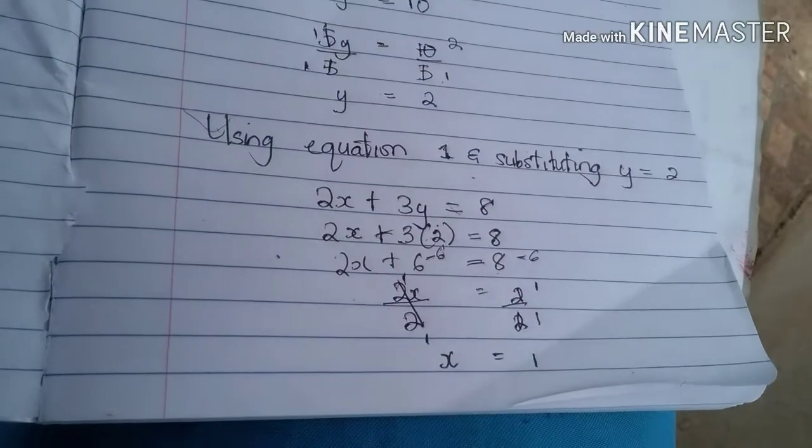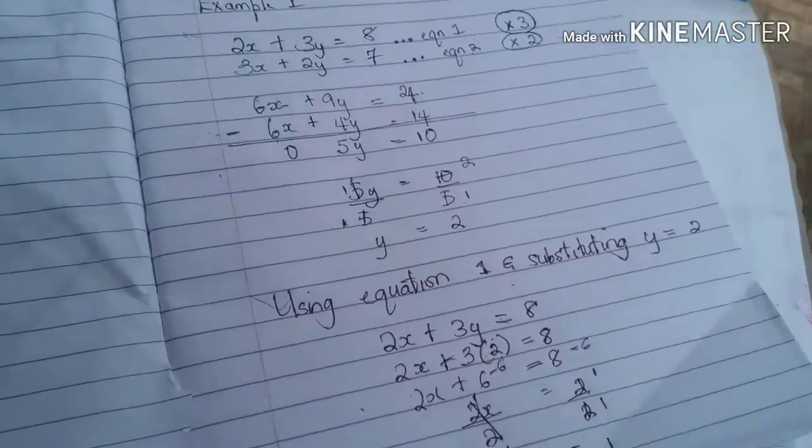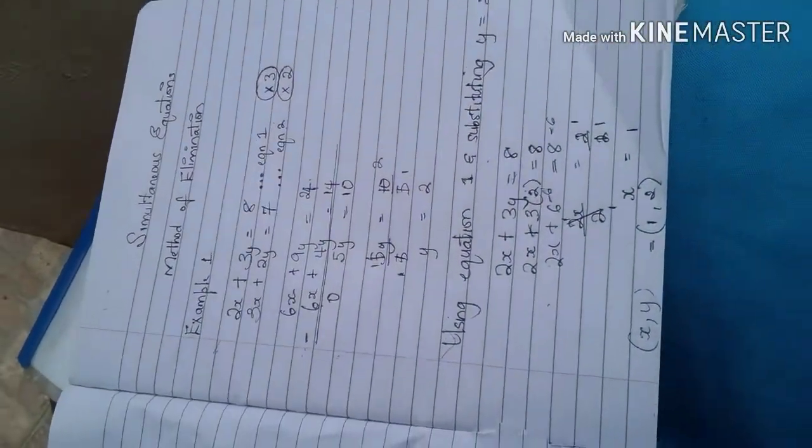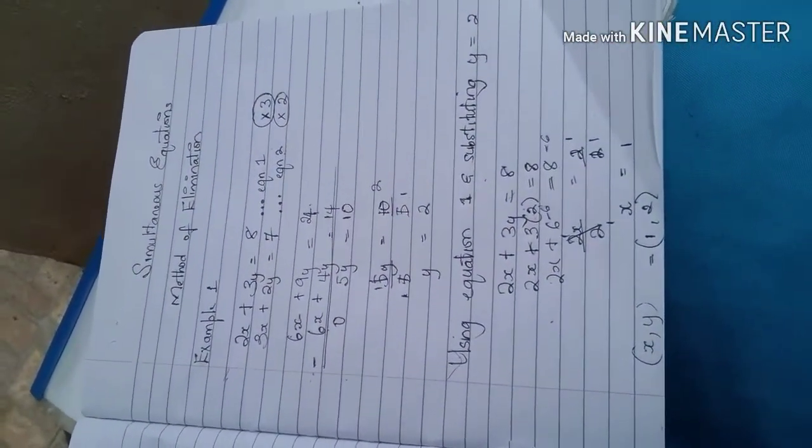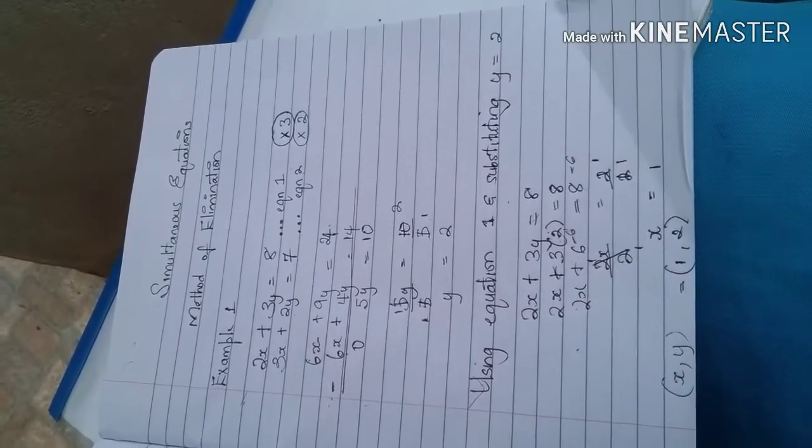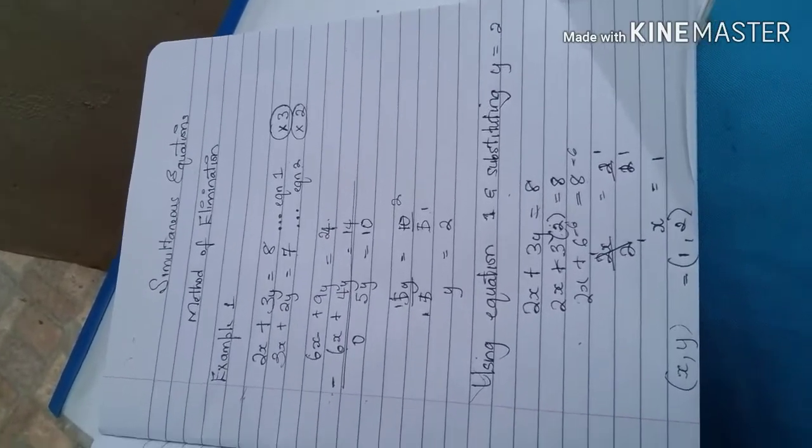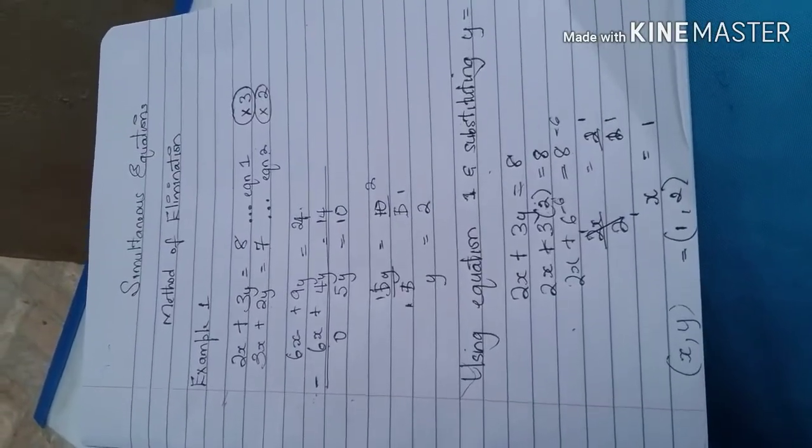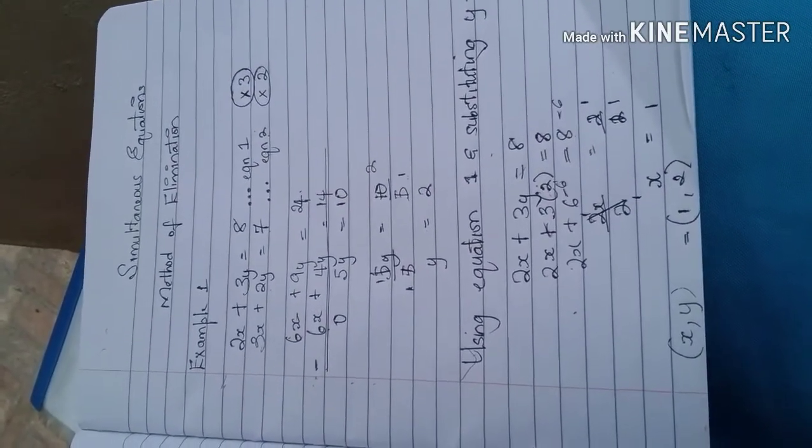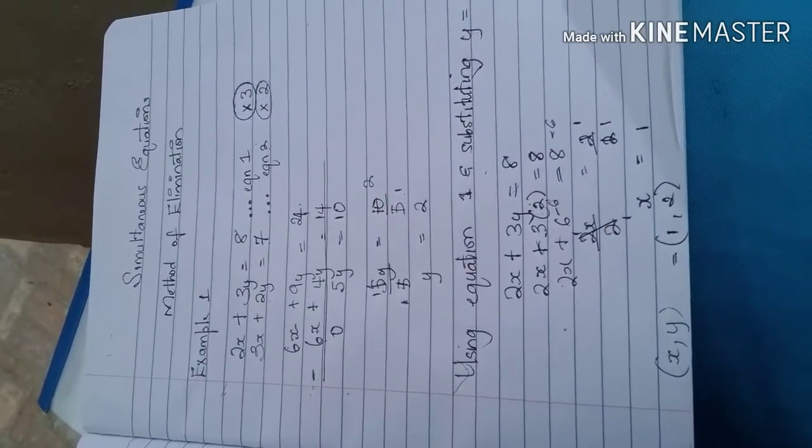So therefore, for this system of equations, and we're writing it as a coordinate x, y, our x is equal to 1, and our y is equal to 2. So watch it and remember to share, like, subscribe, give it a thumbs up. See you in my next video.